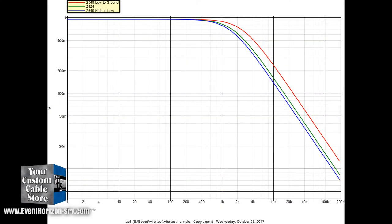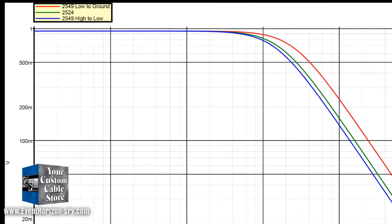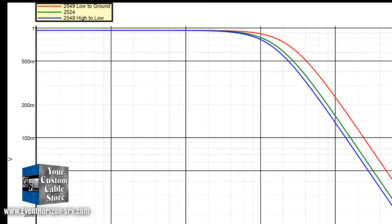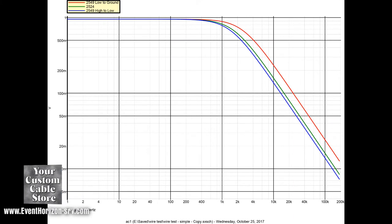So then let's jump to the results. To my amazement, the 2549 low to ground performs the best. The red line is 2549 with low tied to ground. The green line is 2524. The blue line is 2549 with the two conductors tied together.